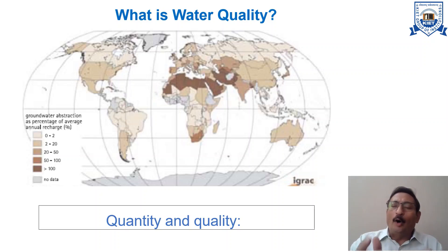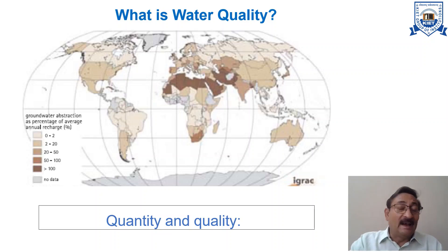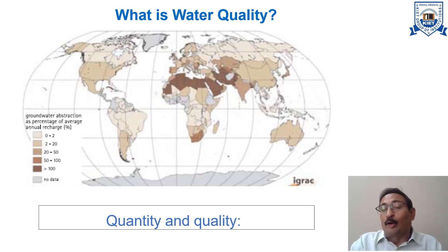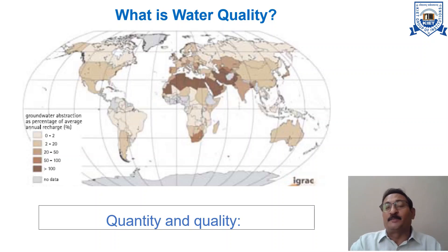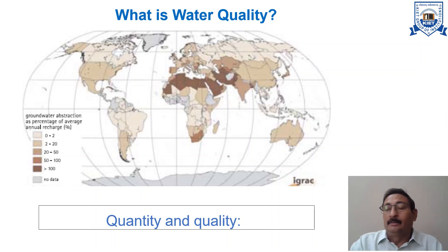On average, each person in a developed country uses about 260 to 270 liters of water per day. We can say that the quality of water is equally important as the quantity. Even if water is present in huge amounts, if it cannot be used for the intended purpose, then it is of no use.